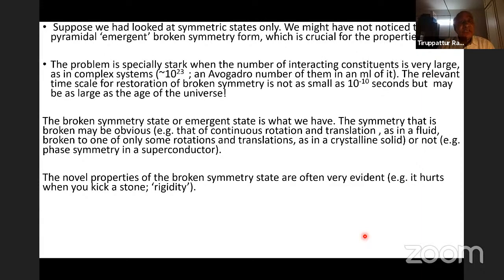In ammonia, this mixing happens very fast. It happens at the rate of about 10 to the 10 times per second. This is known as ammonia inversion. However, chemists who think about such things, they think of ammonia in the way I have shown, namely as a pyramid with nitrogen at the top, because that works. On the other hand, suppose we had looked at symmetric states only, we might not have noticed the pyramidal emergent broken symmetry form, which is crucial for the properties of ammonia. This problem is especially stark when the number of interacting constituents such as in complex systems is of the order of an Avogadro number, which is about 10 to the power 23.